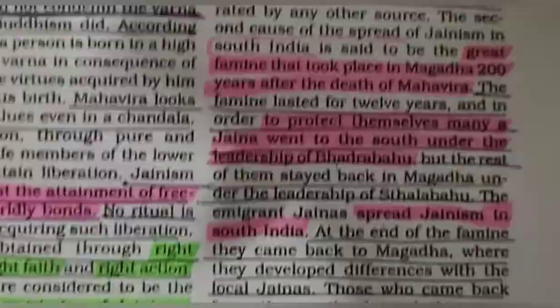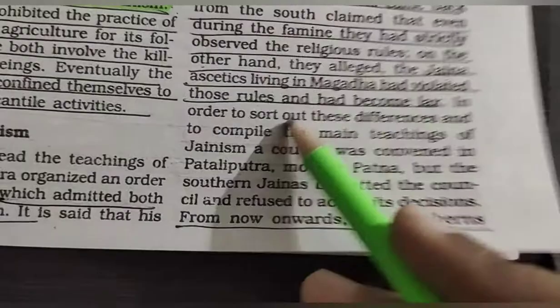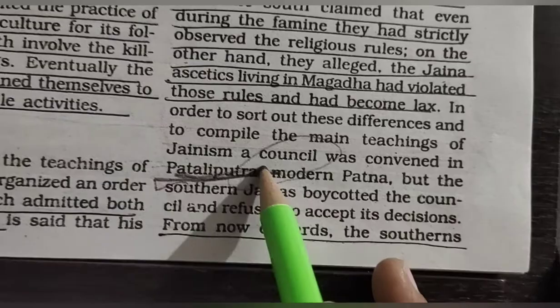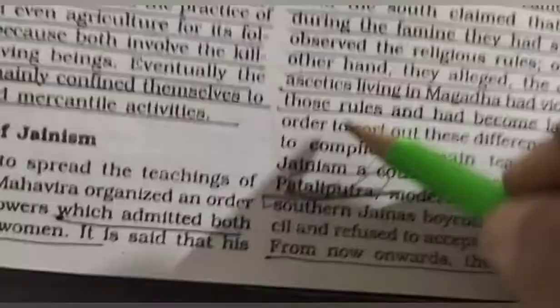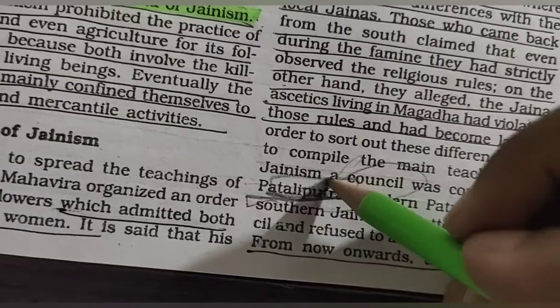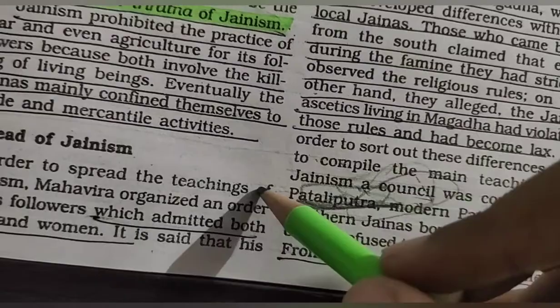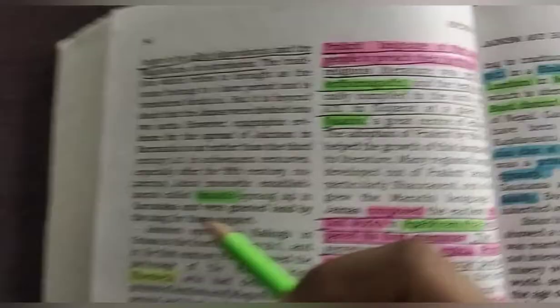A lot of Jainism councils were held. The first was held in Pataliputra, the president was Sthulabhadra, and it was in the year 302 BC. Dates are not that important, but you should know the places and the people. You can relate — if they ask about Sthulabhadra, you can connect that Ashoka was at that point of time. These things are useful for cross-referencing, not as direct recall questions.